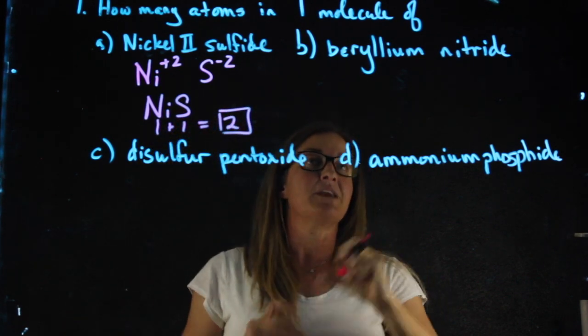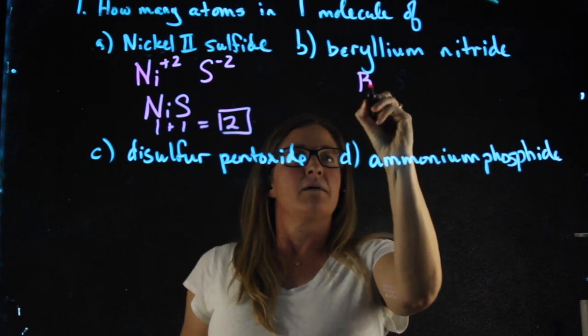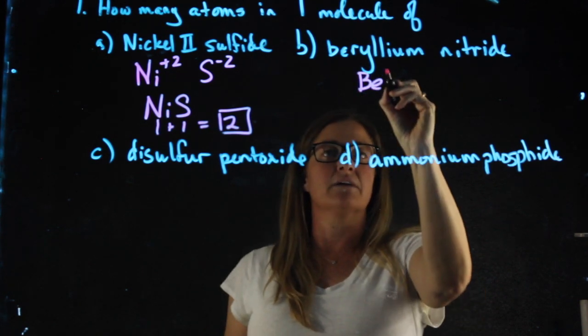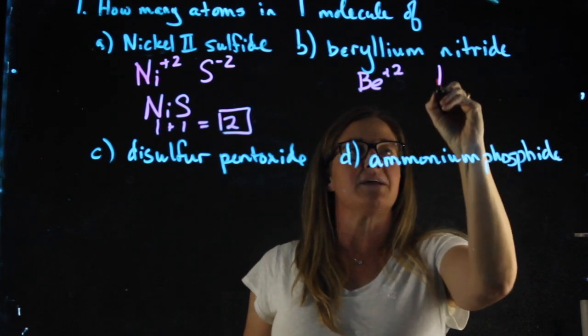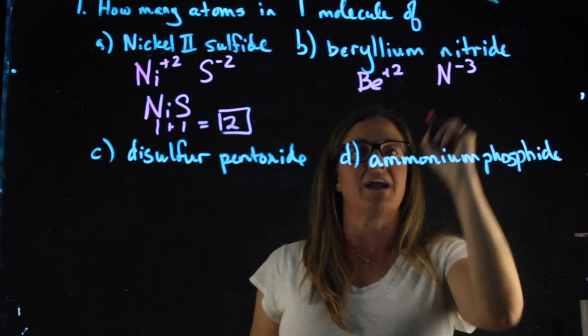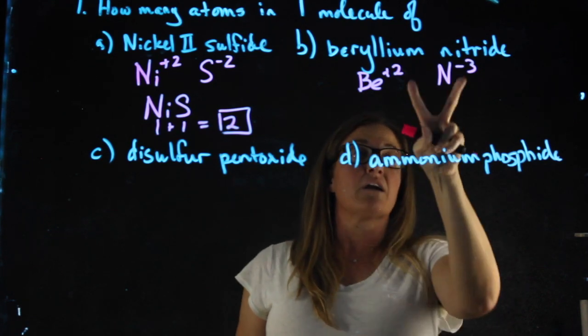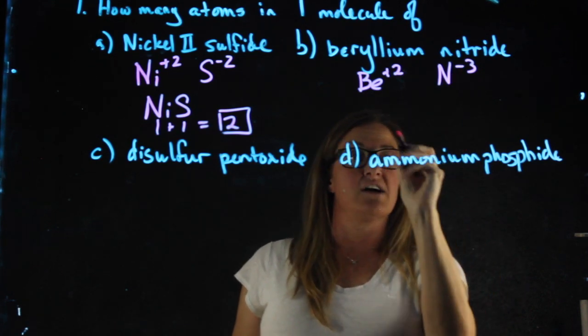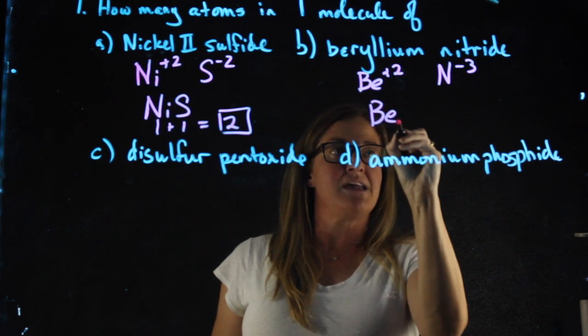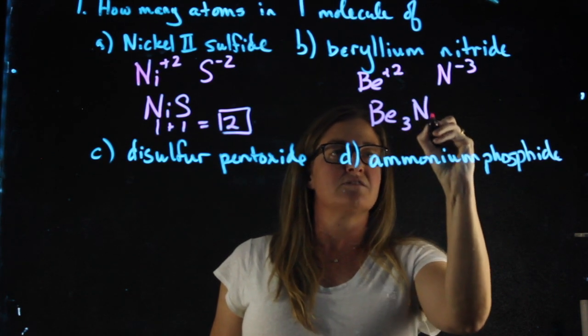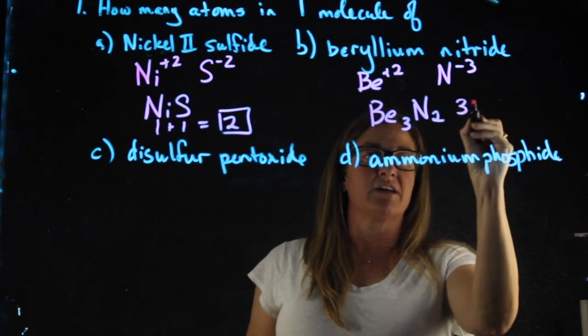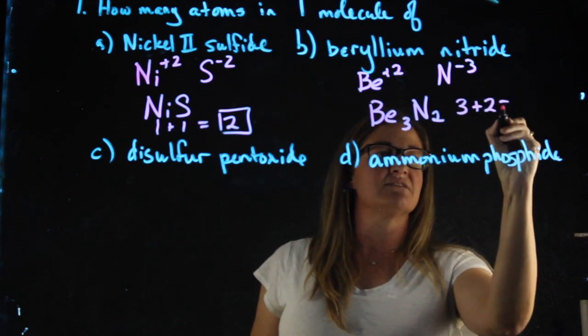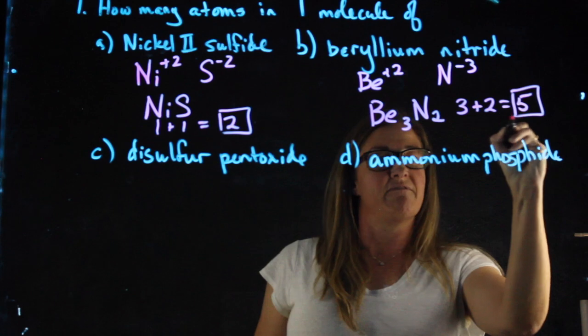B, beryllium nitride. Beryllium is Be. It's in the second column so it has a plus 2 charge. Nitride means nitrogen with a minus 3 charge. Here in order to balance this we need to crisscross giving me Be3N2. When counting my atoms, three berylliums plus two nitrogens gives me a total of five atoms.